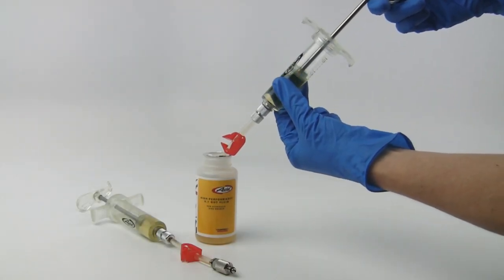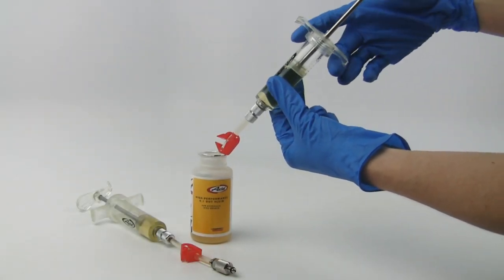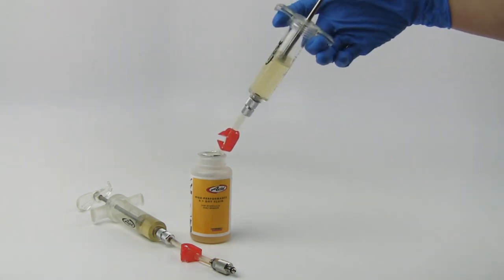Fill a syringe one-half full of Avid High Performance DOT Fluid and the other syringe one-quarter full.